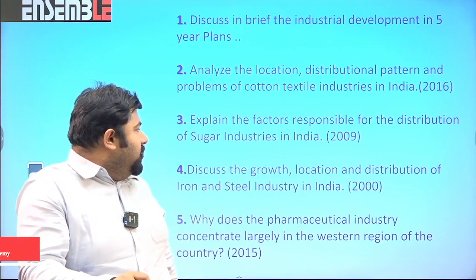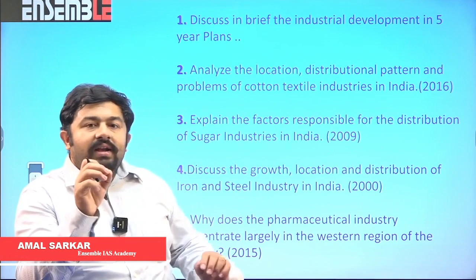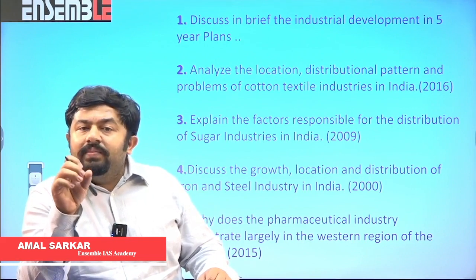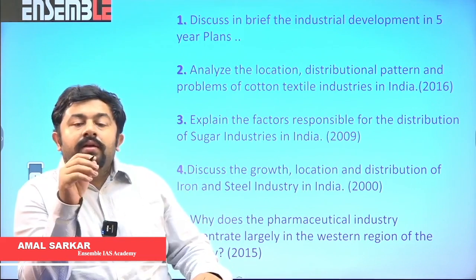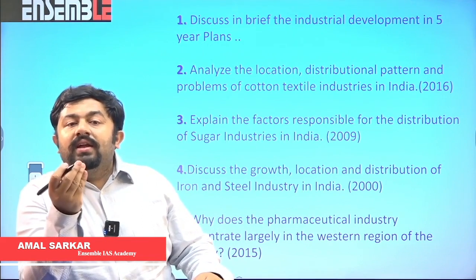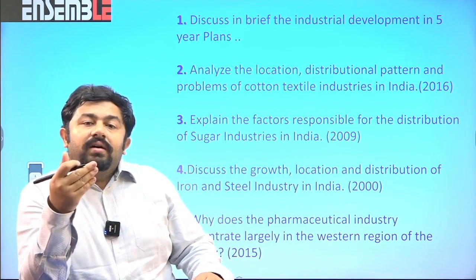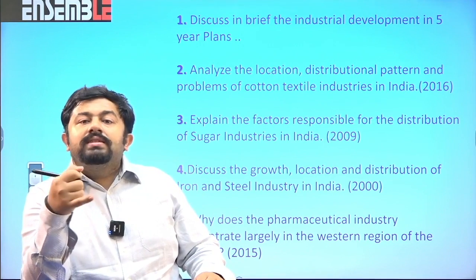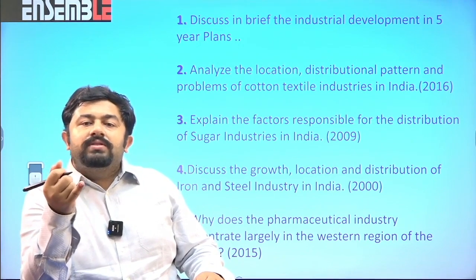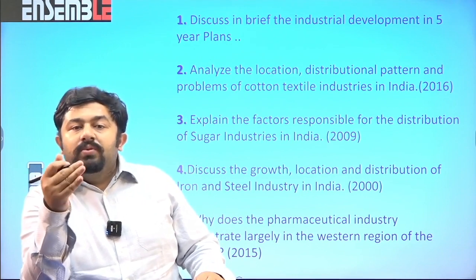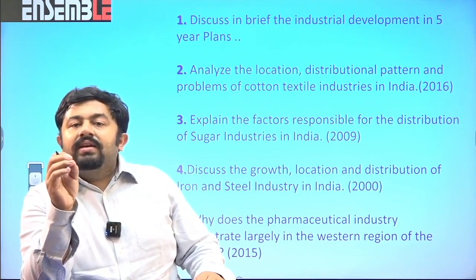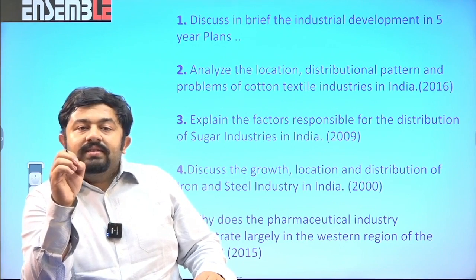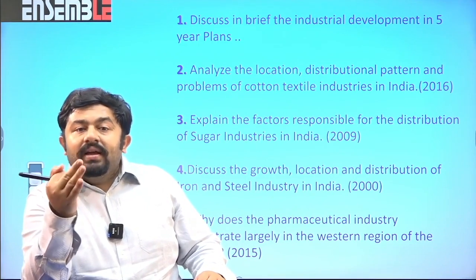Question number four: discuss the growth, location and distribution of iron and steel industry in India. Iron and steel industry is a very integral part of India's economic history. You need to know the raw materials involved and how the industry has evolved. The question directly asks about its growth, evolution, location and distribution. The iron and steel industry is dependent on many raw materials including energy, iron ore, magnetite and other inputs.